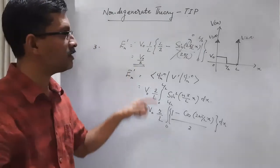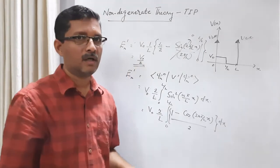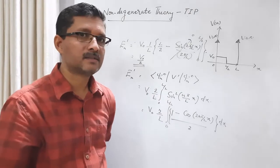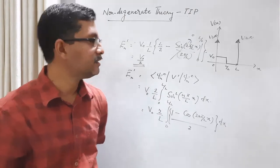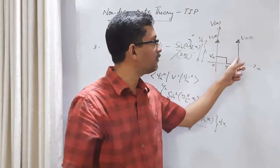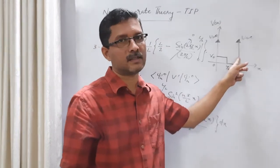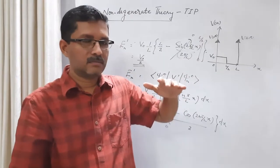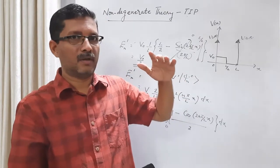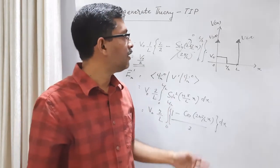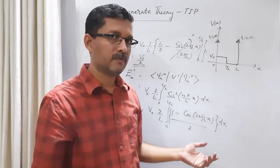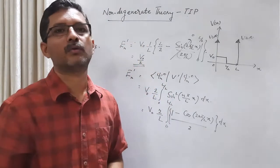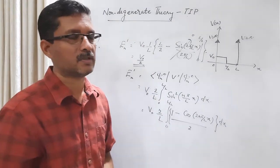So what we get is V0 by 2. The first-order correction in energy is V0 by 2. This is the exact result. With V0 by 2 added, it gives a reasonable result as a first-order approximation.